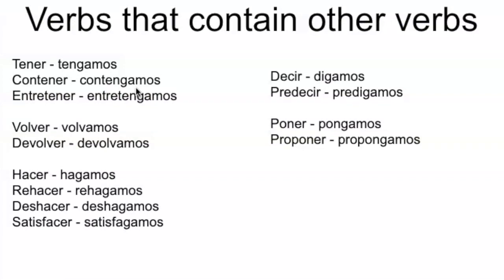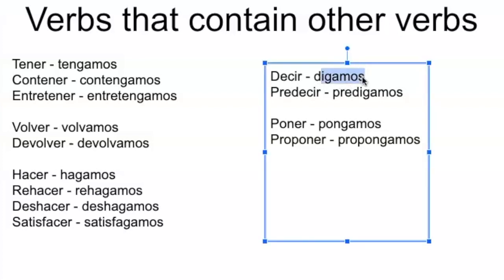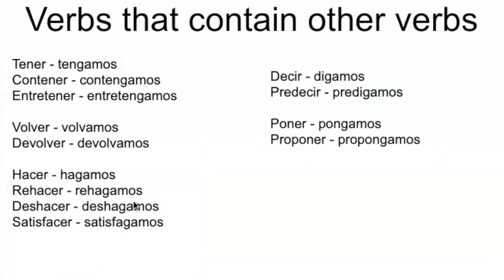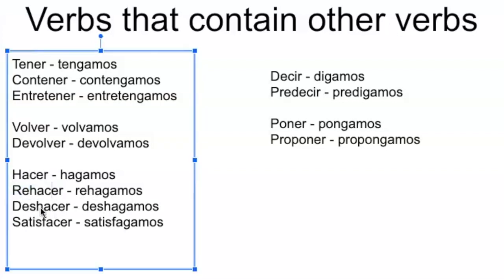Now here are verbs that contain other verbs — look out for these because your teacher might try to trick you. 'Tener' is 'tengamos,' so any verb with 'tener' inside it is also irregular: 'contengamos' — to contain, 'entretengamos' — to entertain. For 'decir,' it's 'digamos,' and so 'predigamos' — let's predict — follows the same pattern. It's not 'decamos,' it's irregular. And 'hacer' is 'hagamos,' so 'rehacer' is 'rehagamos,' 'deshacer' — to undo — is 'deshagamos,' and 'satisfacer' is 'satisfagamos' even though it doesn't visually contain 'hacer.'